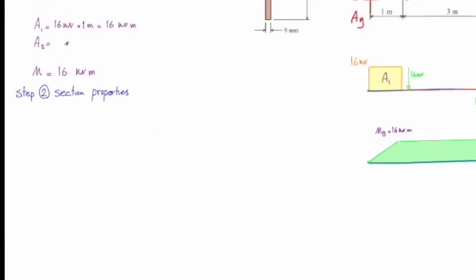In the second step, we need to determine section properties including moment of inertia and centroid. In this problem, these two parameters are provided. The moment of inertia is equal to 1.058 × 10⁻⁵ m⁴, and the location of the centroid from the bottom of the section is 139.1 mm.